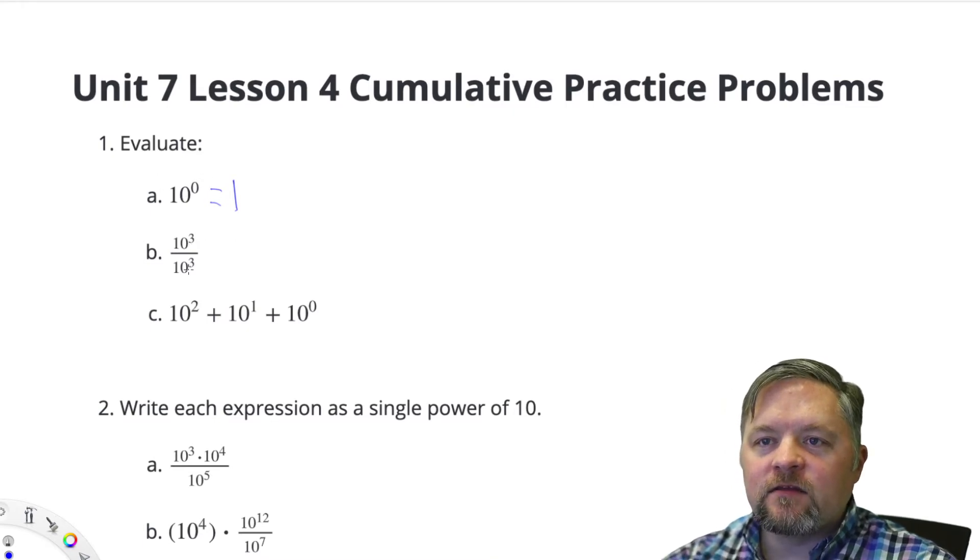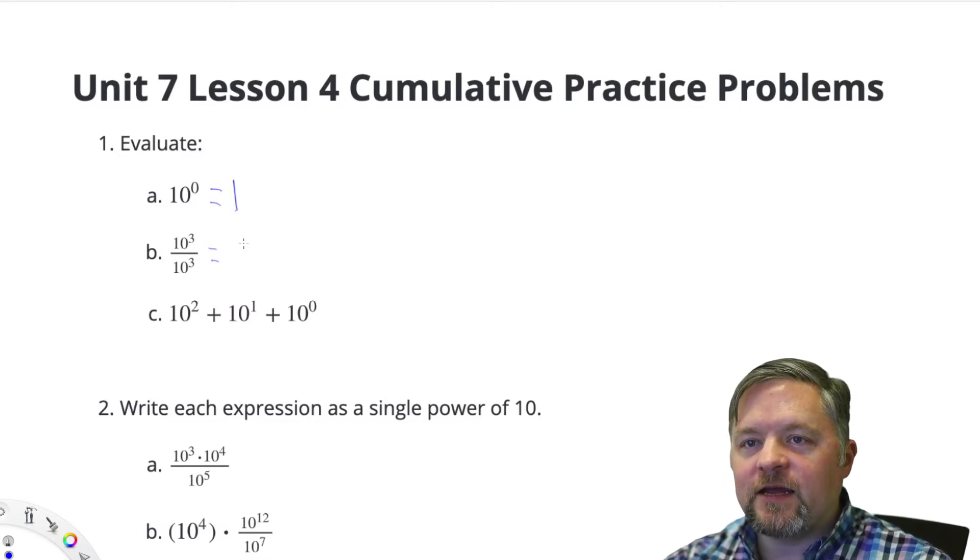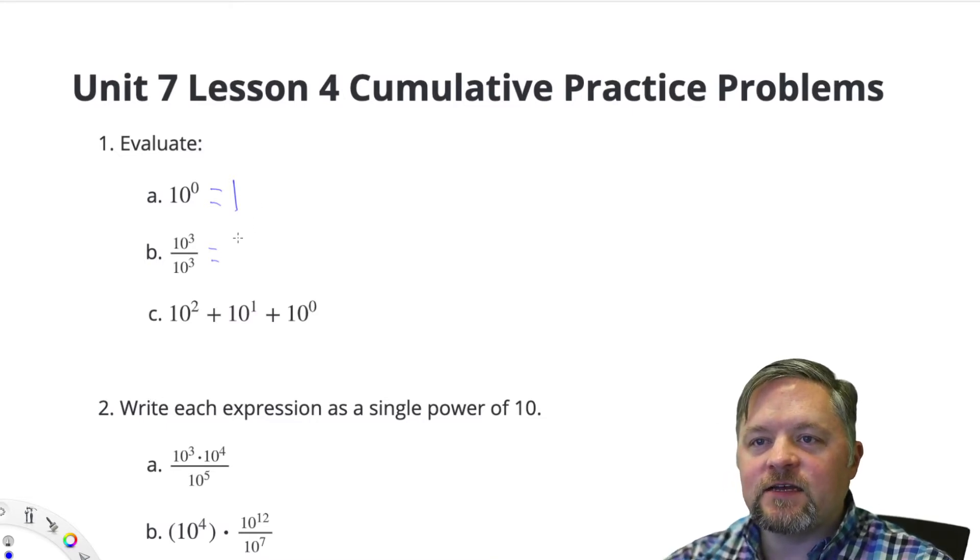10 to the 3 divided by 10 to the 3. Anything divided by itself is... 4 divided by 4, 18 divided by 18. Anything divided by itself is 1.